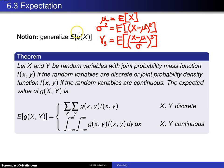But that's it for one dimension. This time we're moving up into two dimensions and here's the theorem. Let X and Y be random variables with joint probability mass function f of x, y if the random variables are discrete or joint probability density function f of x, y if the random variables are continuous.